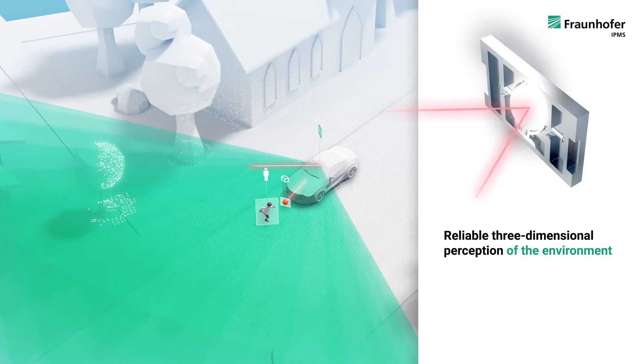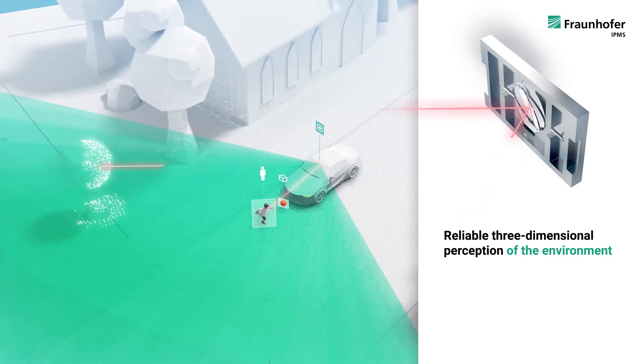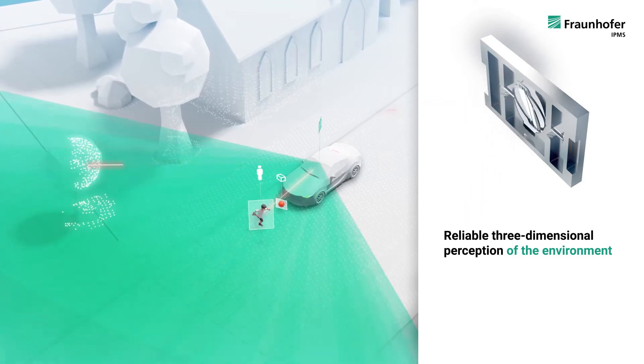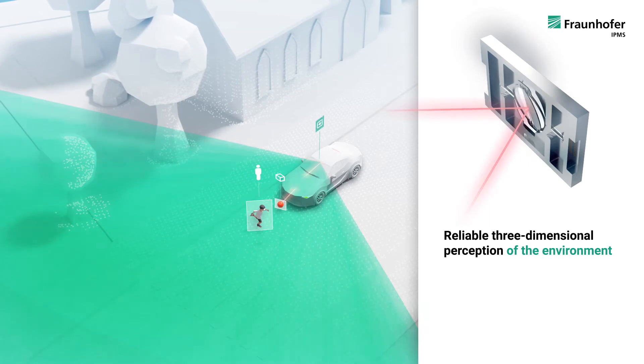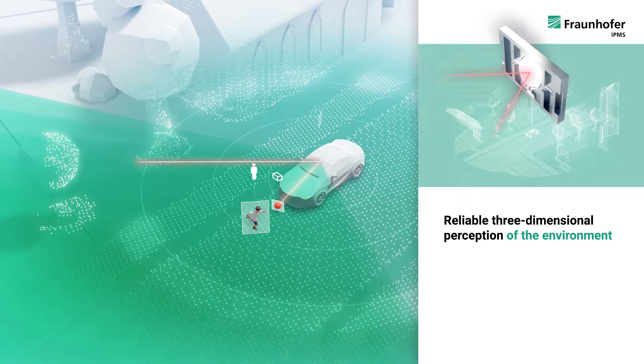Our MEMS mirror distributes the laser beams in two dimensions and bundles the light in the currently measured position. The third dimension is derived by the detection of the reflected light. The distance information for each scanned position results in a 3D point cloud.